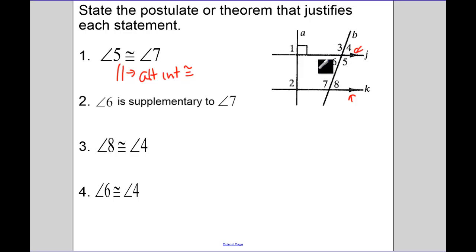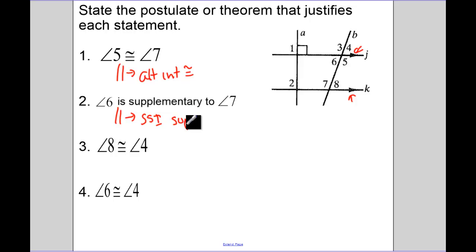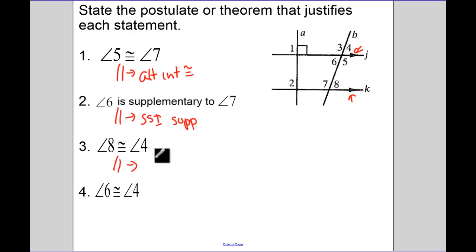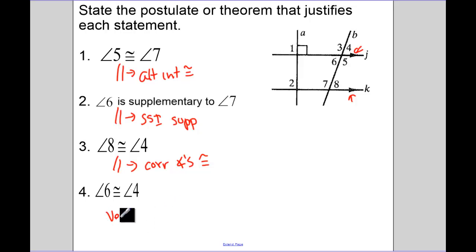Angles 6 and 7 are supplementary because those are parallel lines — parallel lines gives us same side interior supplementary. Angle 8 is congruent to angle 4 because those are corresponding angles, so parallel lines gives us corresponding angles congruent. Angles 6 and 4 — what special angle pair are those? Vertical angles. Make sure you're remembering past theorems we've already talked about.